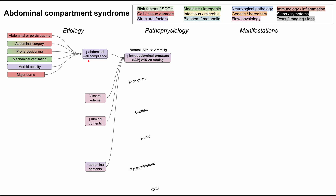Several things can decrease abdominal wall compliance. Abdominal or pelvic trauma can make the abdomen less pliable — for instance, scar tissue can prevent normal bending. Abdominal surgery has a similar effect. Prone positioning, such as during back surgery, prevents the abdomen from bending outward. Mechanical ventilation delivers positive pressure, which is not how you normally breathe, and can also decrease abdominal wall compliance.